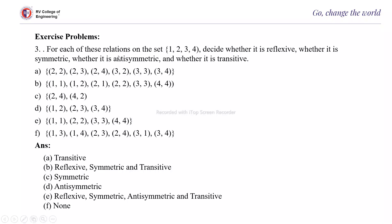For a relation given explicitly, to verify symmetry: if (X, Y) is there, (Y, X) must also be there. (2,2) is there and (2,2) is already there. (2,3) is there, so (3,2) must be there — it is. But (2,4) is there and (4,2) is not there. So it is not symmetric. For anti-symmetry: (2,3) is there and (3,2) is also there, but 2 is not equal to 3. Therefore, it is not anti-symmetric.